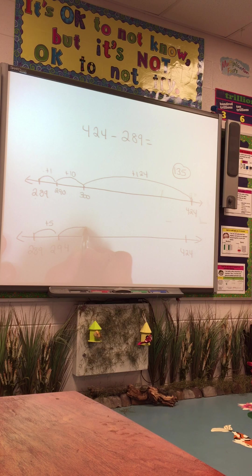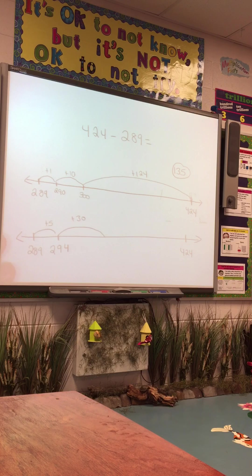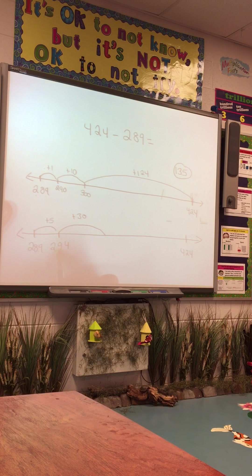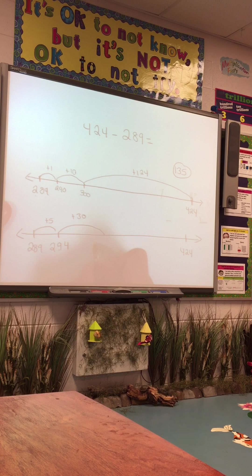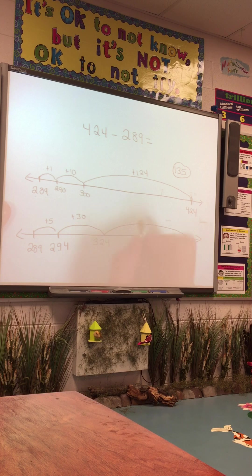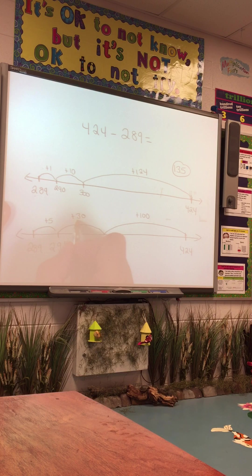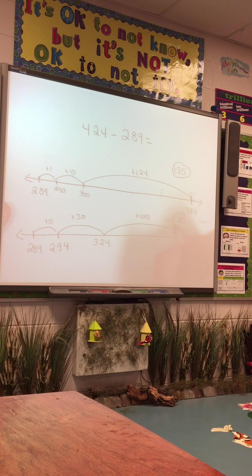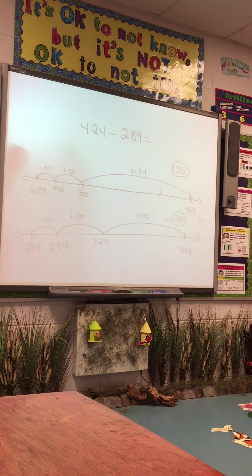Now I'm looking at my tens place. I need a 2, so 9 plus what? It's going to have to be 12 tens. So 9 plus 3 tens, which is 30. 294 plus 30 brings me to 324. And last, I can see my final jump from 324 to get the 4 in the hundreds place, plus 100, and that would give me